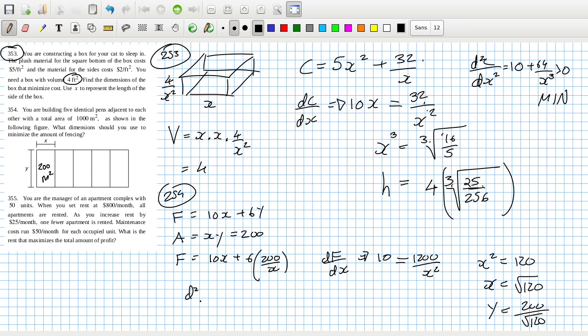And if we calculate the second derivative, we get 10 plus 2400 over x cubed, which is positive, which makes it a minimum. That's done.